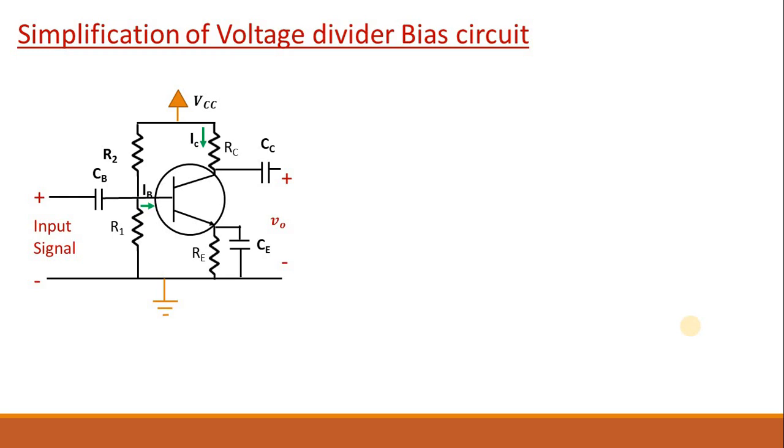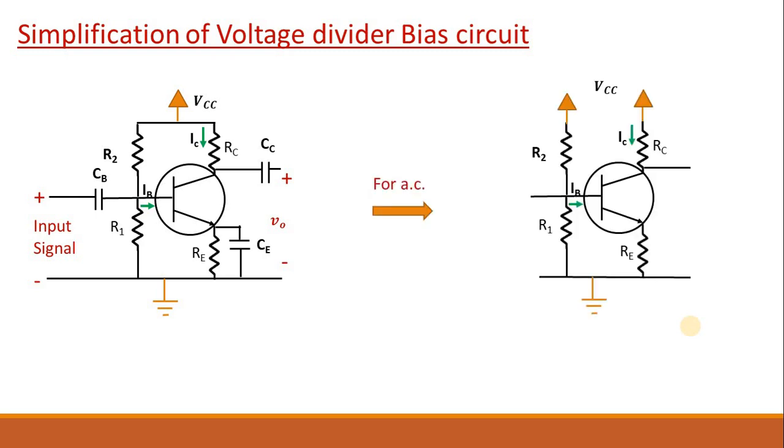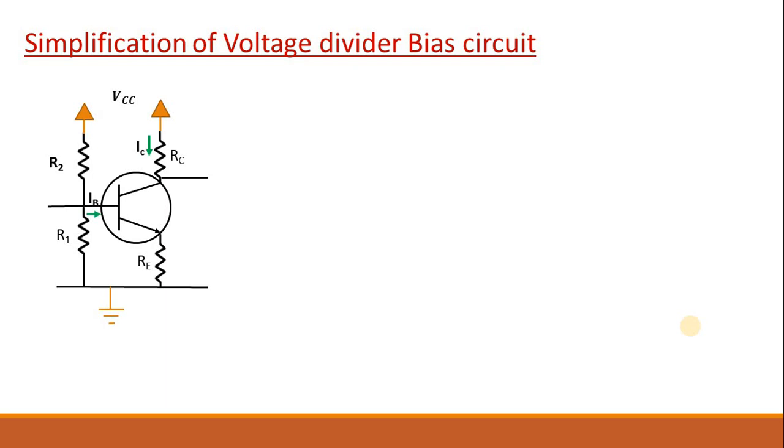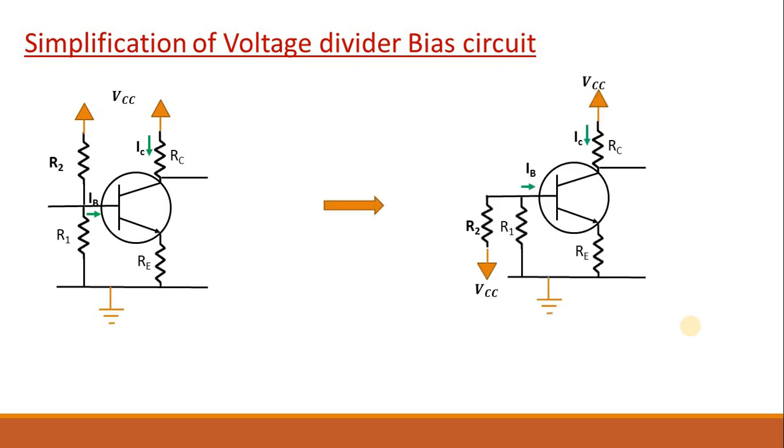As we will deal this circuit for the AC signals, then capacitor will be short-circuited for the AC. And this VCC that is voltage, is connected to both RC and R2. So now just make it separate. Now just redraw this circuit, same configuration.